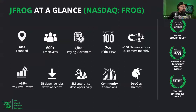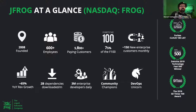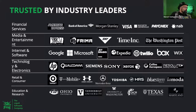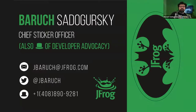A couple of words about JFrog: it's a company founded in 2008, more than 600 employees, almost 6,000 customers. Our goal is to make them happy by allowing them to release faster with better quality. My name is Baruch Sadogurski, I'm the Chief Sticker Officer of JFrog and Head of Developer Advocacy.